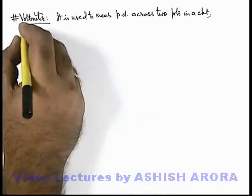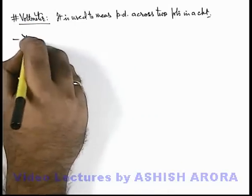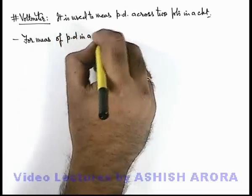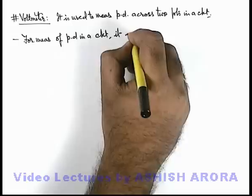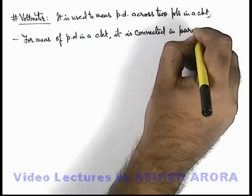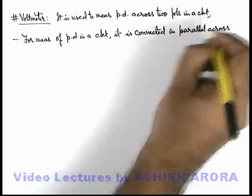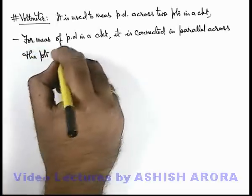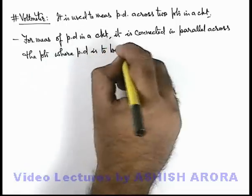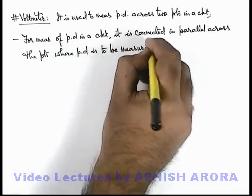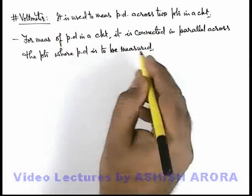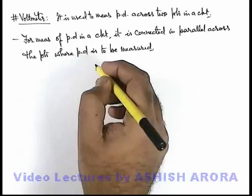For measurement of potential difference in a circuit, this voltmeter is connected in parallel across the point where potential difference is to be measured. The point across which we wish to measure the potential difference, we connect the given voltmeter in parallel combination so that its reading can be taken.